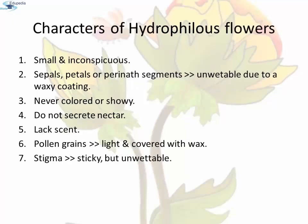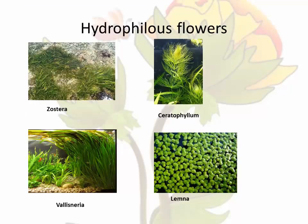Characteristics of hydrophilous flowers: These flowers are very small and inconspicuous. Sepals, petals, or perianth segments are unwettable due to waxy coating over them. They are never colored, showy, or produce nectar. They lack scent. The pollen grains of hydrophilous flowers are very light and covered with wax. The stigma is very sticky but unwettable. Examples include Zostera (hypohydrophilic), Ceratophyllum (hypohydrophilic), Vallisneria (epihydrophilic), and Lemna (epihydrophilic).